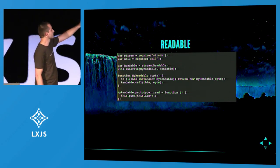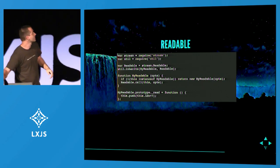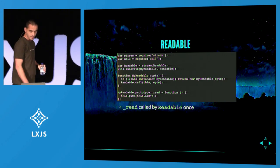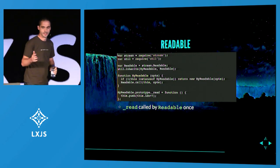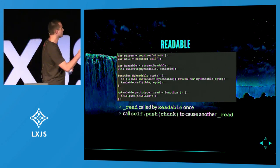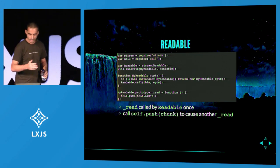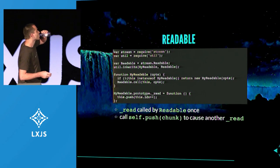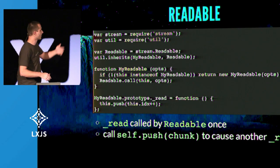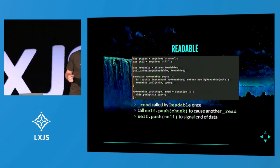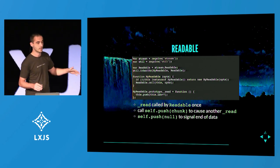For the readable stream, the most important part is the last few lines. We implement underscore read, and what basically happens is it is called exactly once, and it will never be called again until we push a chunk into the readable. Once we do that, it will call our underscore read again. So we could basically do some work here asynchronously — like we could go to the web and pull something down. And if you want to say we are done and there's no more data coming from us, we push null. That signals the stream is done — the stream will be officially ended, and if anyone tries to read from it in the future, it will throw an error.